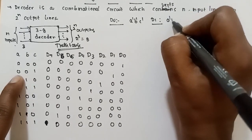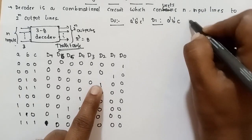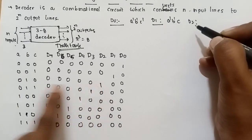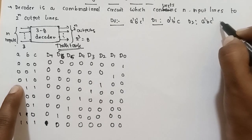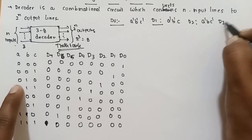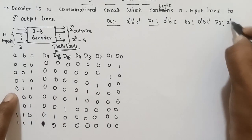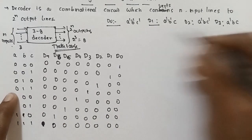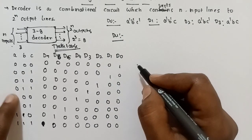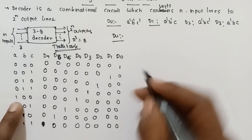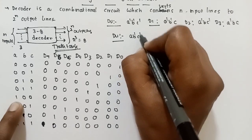D1 key: A' B' C. D2 key: A' B C'. D3 key: A' B C. Next D4: A B' C'.